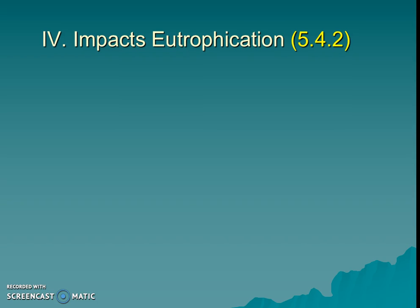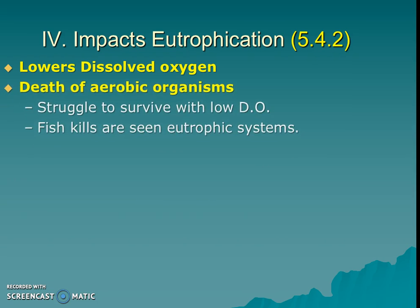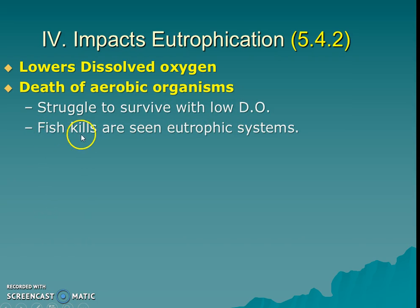So what are the overall impacts of eutrophication? It lowers dissolved oxygen and therefore things can't really survive. All aerobic organisms needing oxygen are going to die because of the low DO, and we see this especially — and get really freaked out as humans — when we see large amounts of fish showing up dead on beaches and in streams.